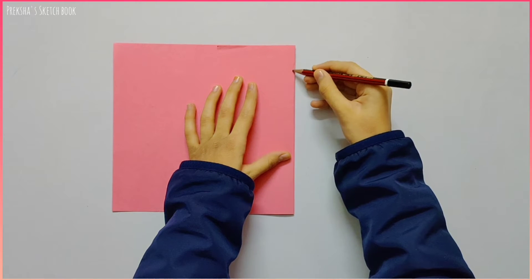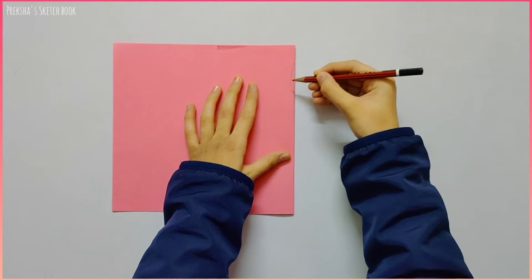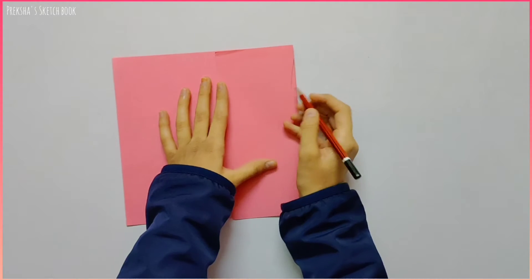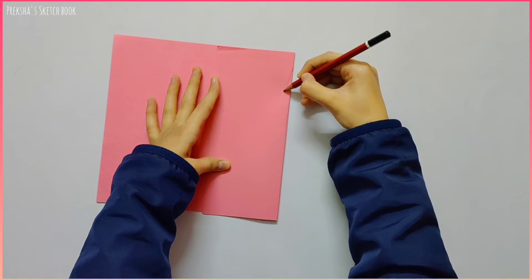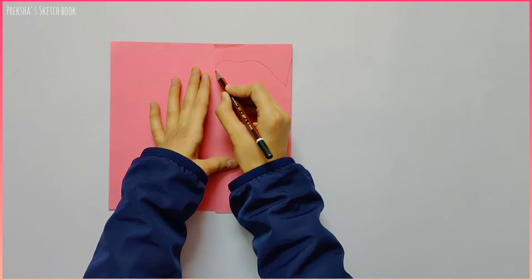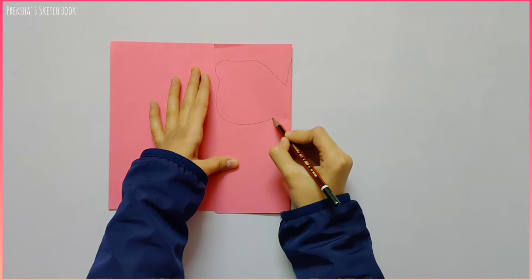First we will sketch a very thin body. I'll keep it just very slim so that the butterfly does not look very fat. Then we will make one wing; the wing is going to be this shape for the first butterfly.